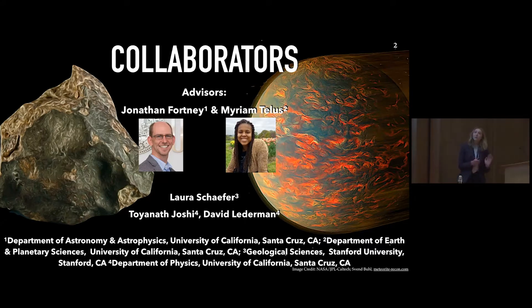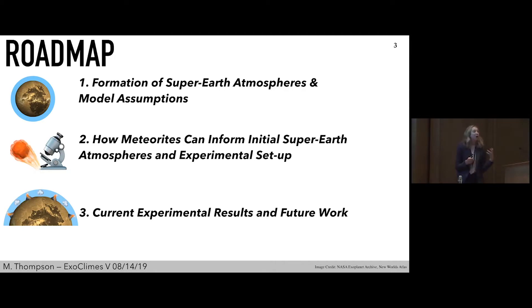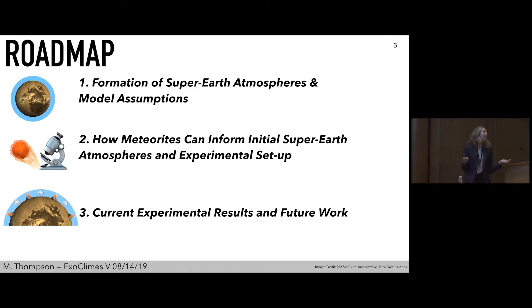To start, here's a brief roadmap of where we're going for the next few minutes. I'm going to start by discussing the different possible formation mechanisms for super-earth and other lower mass planet atmospheres, and talk about some of the assumptions we typically put in our models for what these atmospheres are likely made of. Then I'll motivate how meteorites can help inform the initial super-earth atmospheres that we expect, motivating why we're doing experiments in the lab and explaining our setup. Then I'll discuss some of our current experimental results and future work.